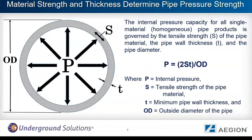The internal pressure capacity for all single material pipe products is determined by the three variables shown in this diagram: the tensile strength of the pipe material, the pipe wall thickness, and the pipe diameter.